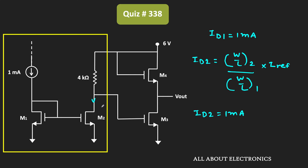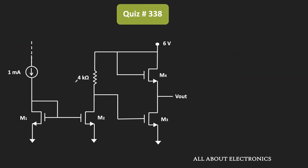Since I-reference = 1 mA and the W/L ratios of the two MOSFETs are equal, ID2 = 1 mA, meaning the current through transistor M2 is 1 mA. Since the gate current of all MOSFETs is negligible, this same current ID2 is also flowing through the 4 kΩ resistor, so the current through the 4 kΩ resistor is also equal to 1 mA.